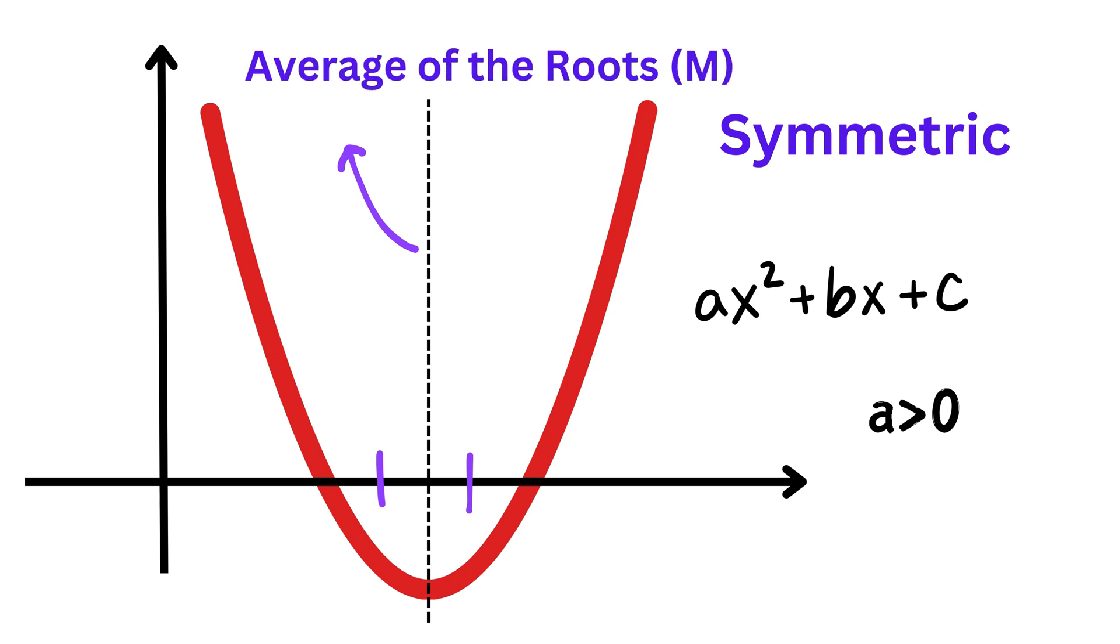Therefore, if we somehow know the average of the roots of this equation, then the value of roots will simply be this average minus some constant value, or U, and average plus U, where this distance is U.